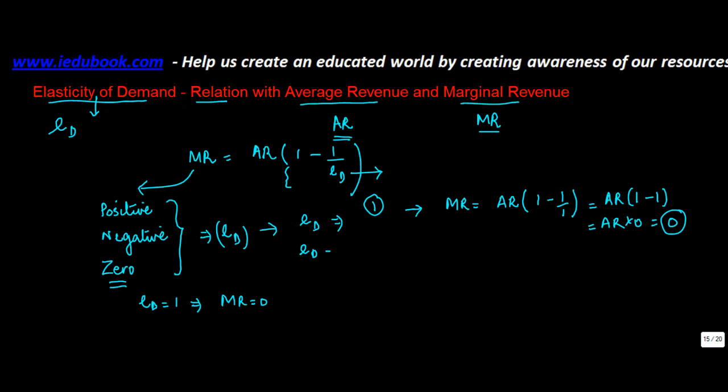Let's say ED is greater than 1. Then marginal revenue will be equal to average revenue into, when we say greater than 1, let's say 2, take it as 2, 1 minus 1 upon 2. Average revenue into 1 minus half will give you half only. So it says half of the average revenue.